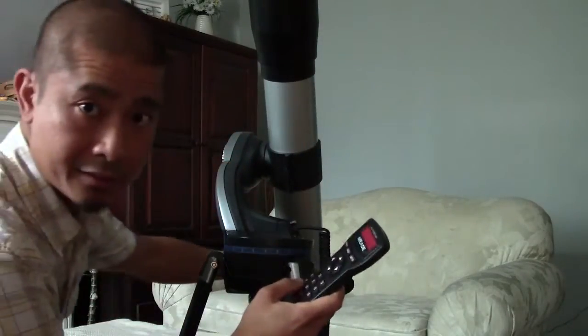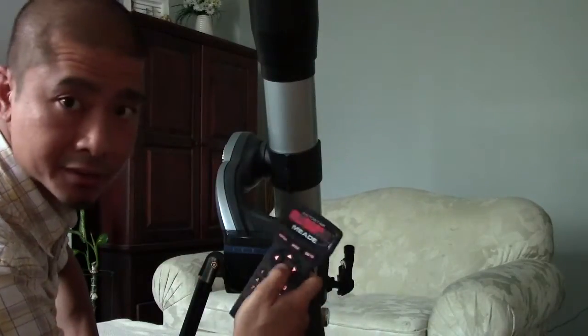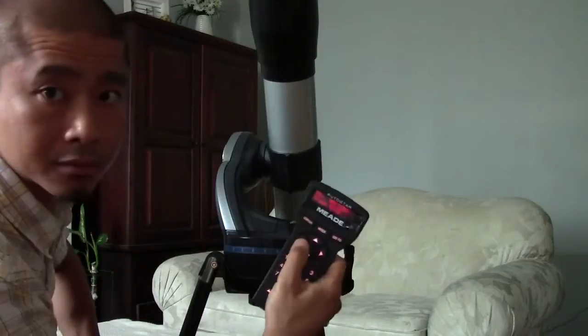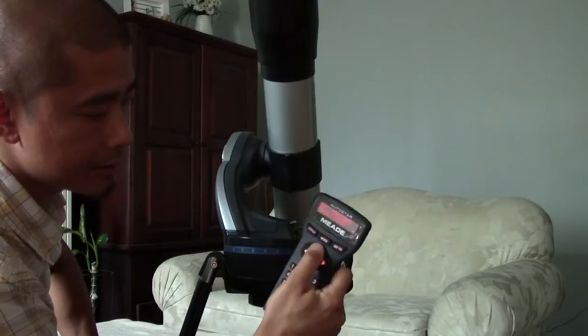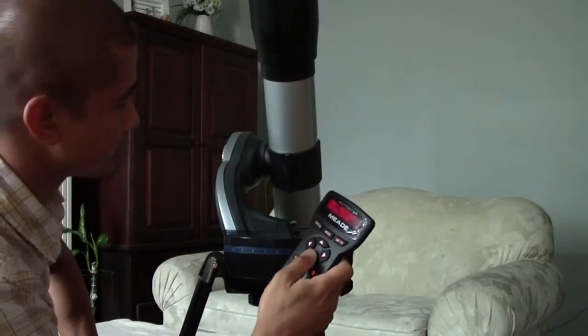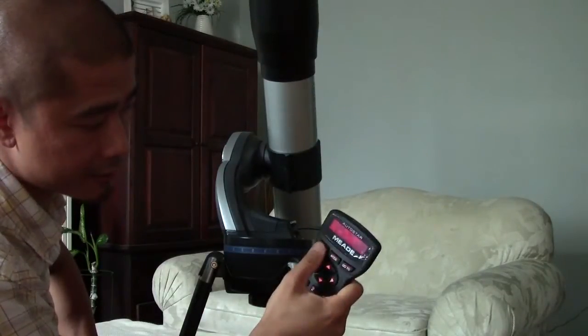Now that it's beeped like that, it means it's pointing to Arcturus. But what I need to do is look into the eyepiece and try to center Arcturus using these keypad buttons. So I can hit left or right, up or down until it's centered. And once it's centered I hit enter again.